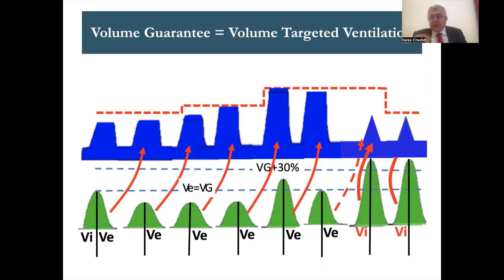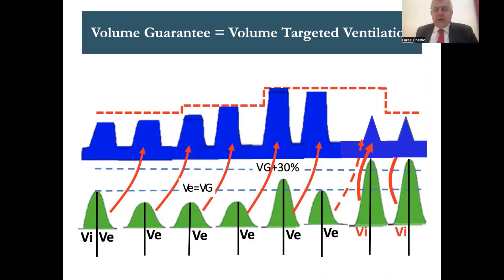This is the principle of volume guarantee — the pressure produces volume and the volume orders the pressure of the next breath. We use the expired volume because we know it came from the lung. If there is leak, the machine compares inspiratory and expiratory flow, measures the leak, and performs leak compensation so that the machine does not give more PIP simply because the expired volume appears low due to leakage around the tube.